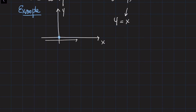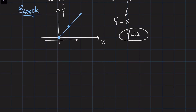For example, if x equals zero, y is zero; if x equals one, y is one; if x equals two, y is two — and so on, then we simply connect these points. At the same time, if y is independent of x, for example y equals two, then no matter what x is, the y coordinate of all points along that curve is always equal to two — which means it's simply the horizontal line y equals two.